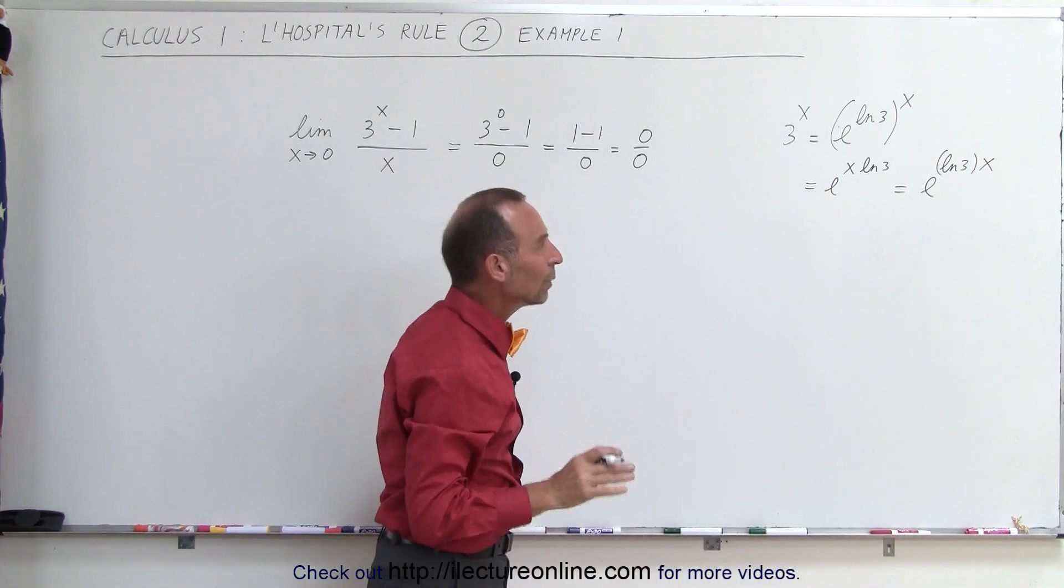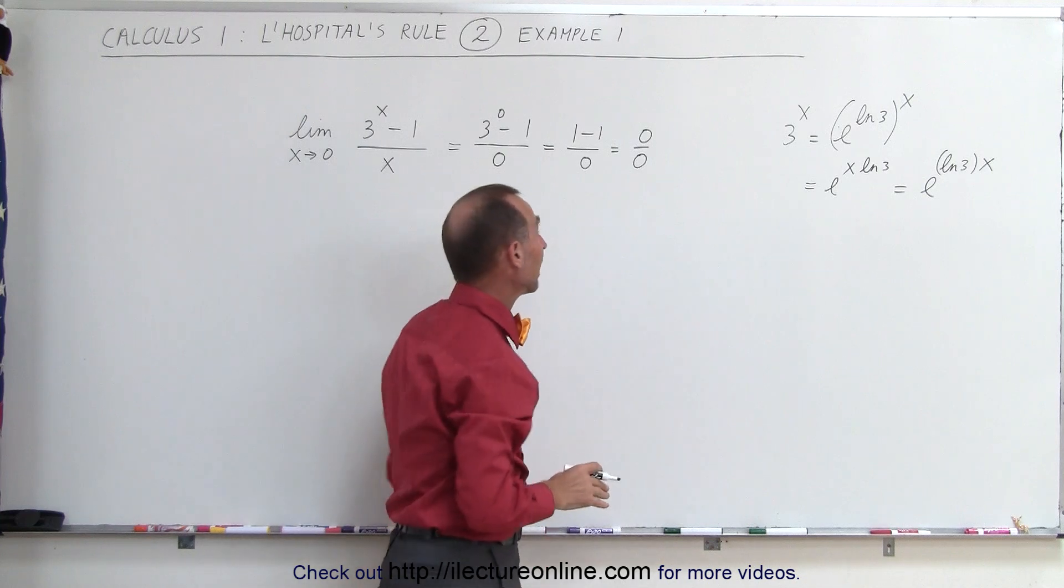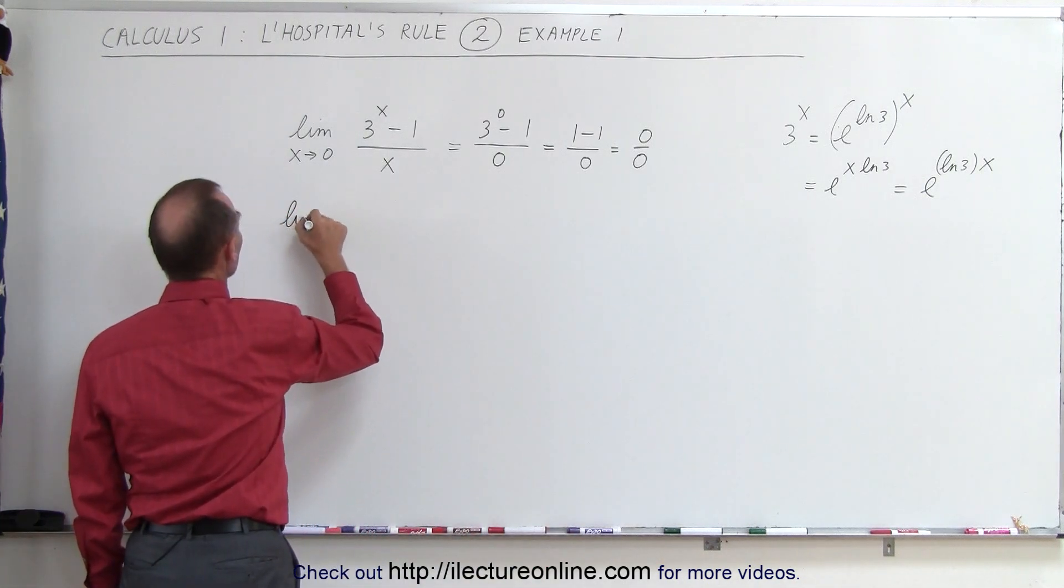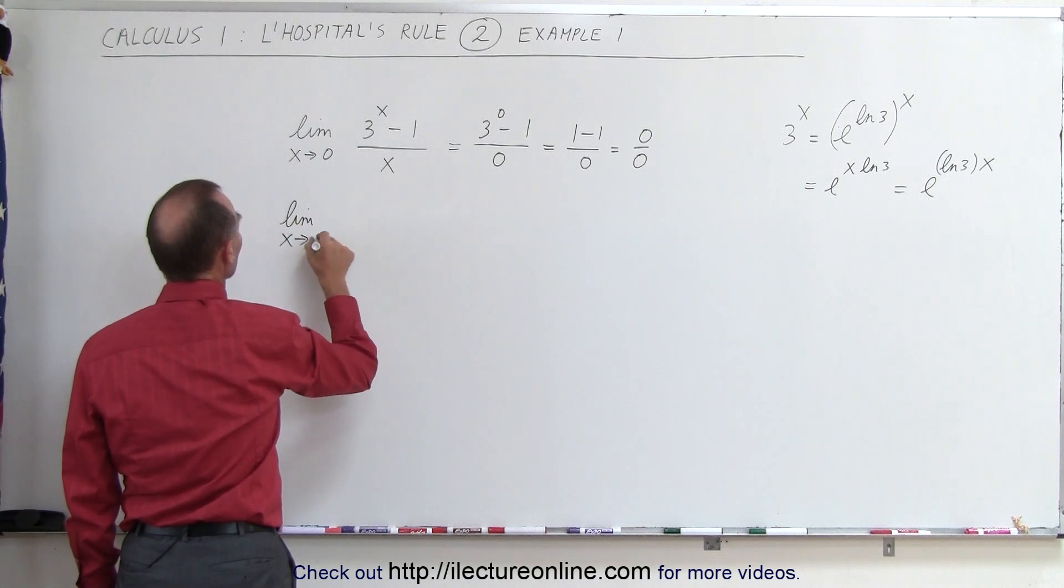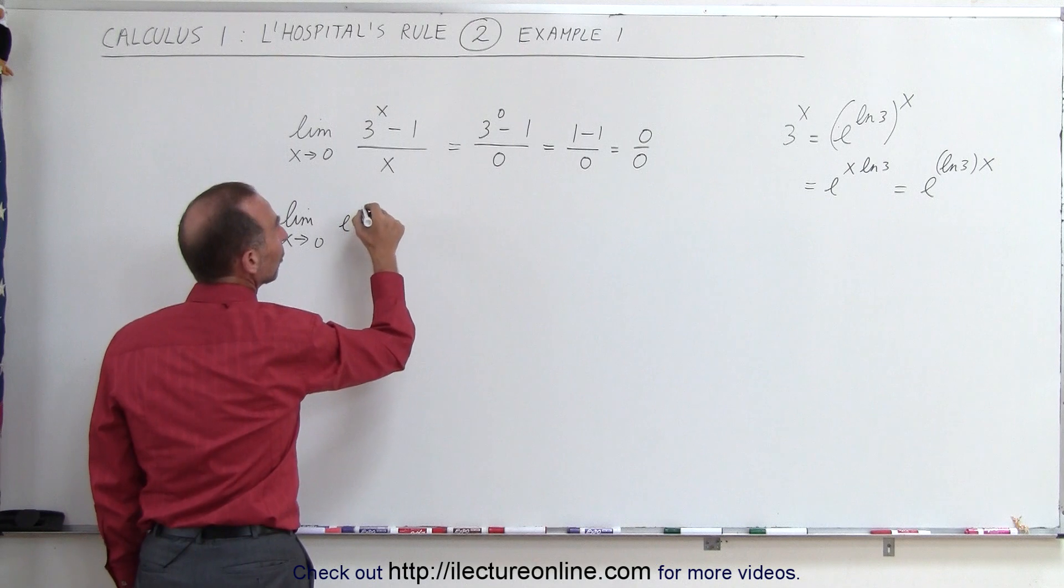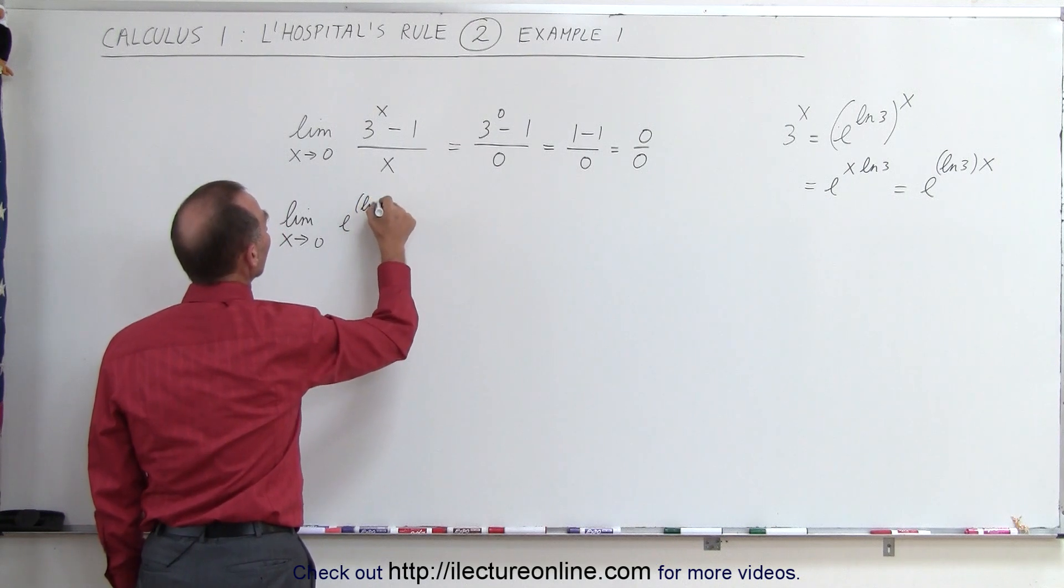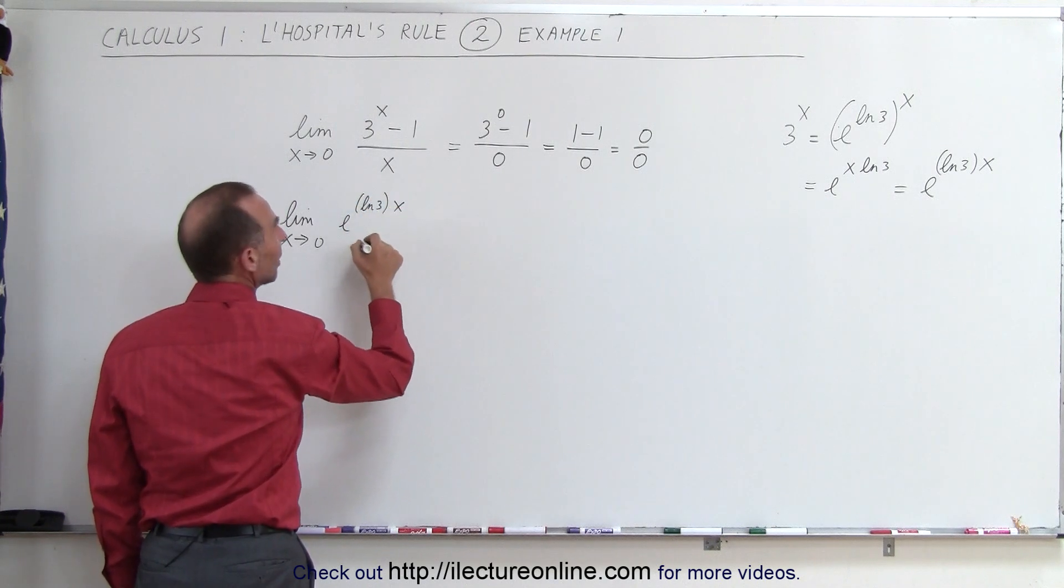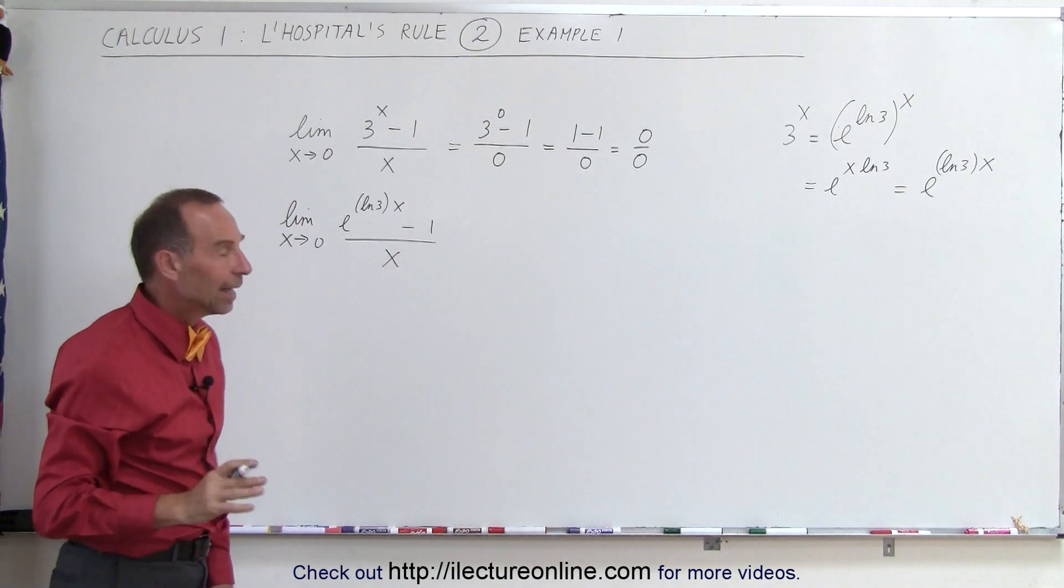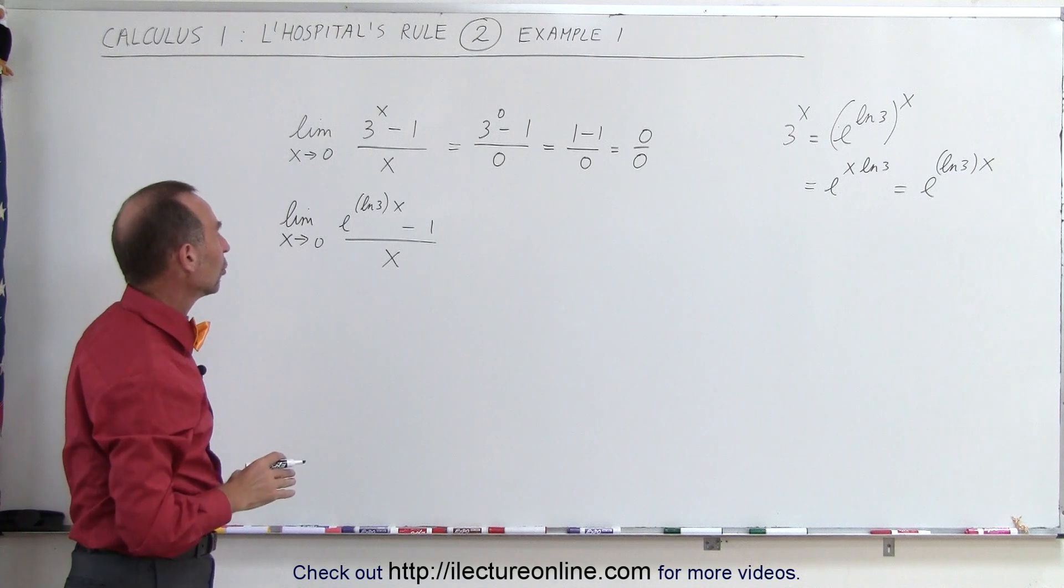Now when we write it like that, we can indeed take the derivative. We're going to rewrite our function as follows. We're going to take the limit as x approaches 0. Instead of 3 to the x, we're going to write it as e raised to the natural log of 3 times x, still minus 1 divided by x. Now we can go ahead and apply L'Hôpital's rule.